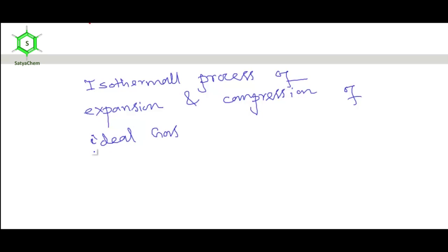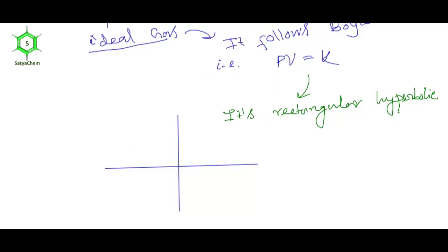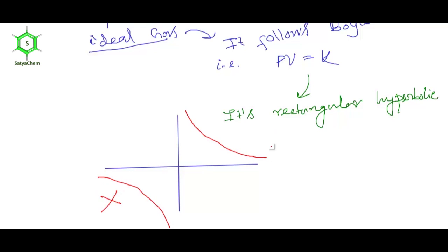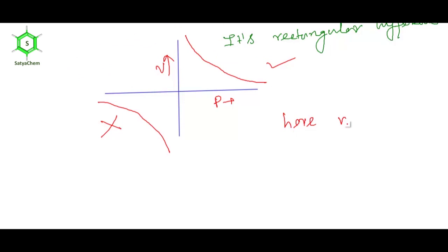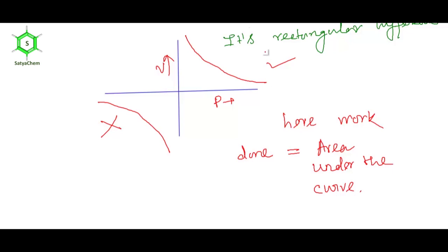We know an ideal gas follows Boyle's law. The equation of Boyle's law is PV = K, where P is pressure and V is volume. The plot curve is a rectangular hyperbola. We should not consider the curve in the third quadrant because in the third quadrant P and V are negative, and negative volume is an invalid idea. Here, work done is the area under the curve.